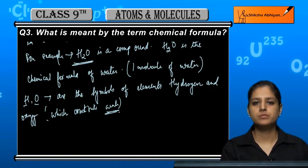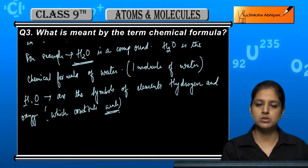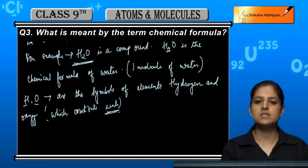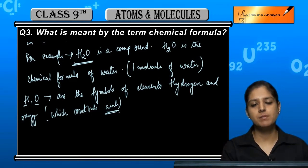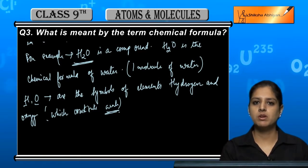A chemical formula of any compound is its representation, one molecule representation, and we will write in which terms it will be made by the elements. This is what a chemical formula is.